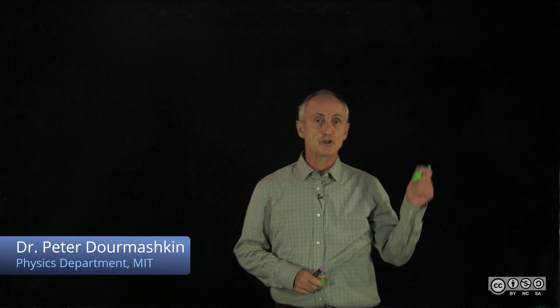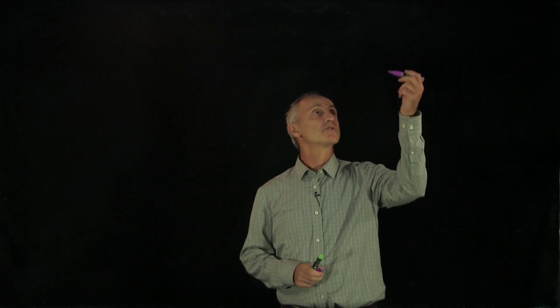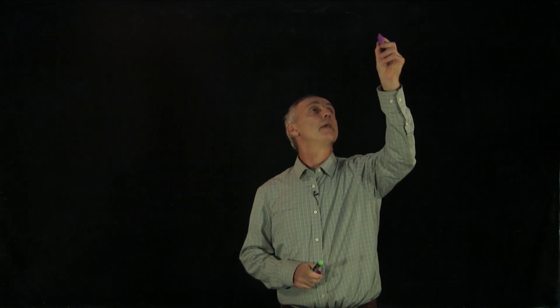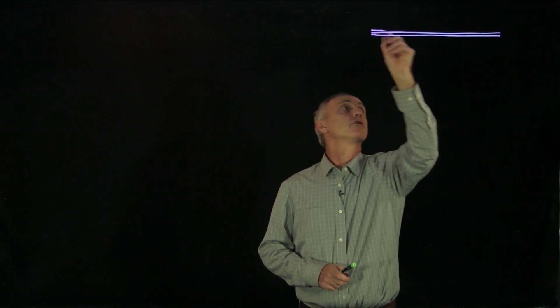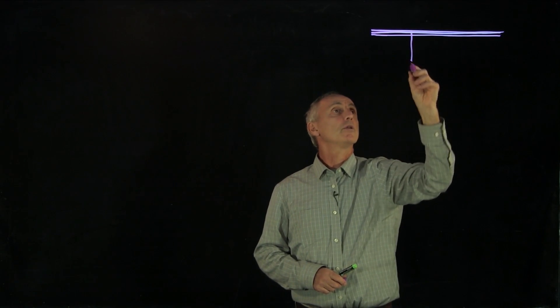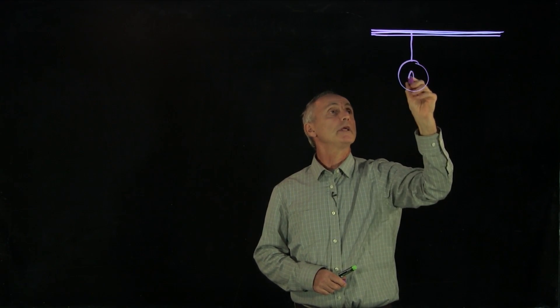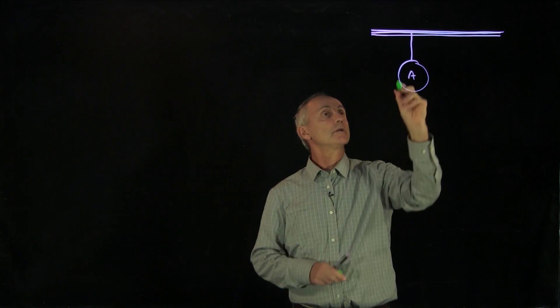Let's look at a typical application of Newton's second law for a system of objects. What I want to consider is a system of pulleys and masses. I'll have a fixed surface here, a ceiling. And from the ceiling, we'll hang a pulley, which I'm going to call Pulley A.